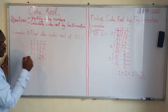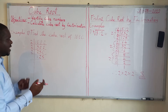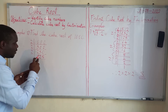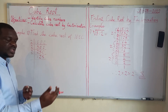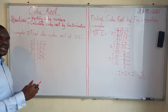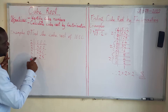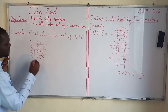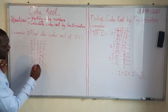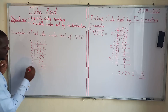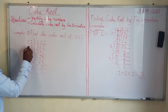At this point we have an odd number, 125. To test if 3 can divide, we add the digits: 1 plus 2 plus 5 equals 8, which is not a multiple of 3, so 3 cannot divide. We go to the next prime number, which is 5. 5 divides 125 to give 25. 5 divides 25 to give 5. And 5 divides 5 to give 1. Once we arrive at 1, we stop and group the prime factors into 3s.